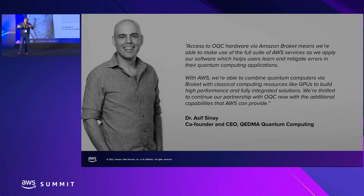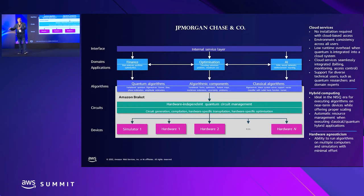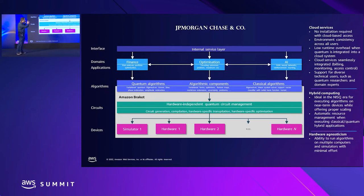I believe Amazon Braket helps foster these connections with the purpose of accelerating innovation. At re:Invent 2021, Marco Pistoia — Managing Director and Head of Global Technology Applied Research at JPMorgan Chase — presented a platform his team built to work with quantum computers. The interesting domains are finance optimization and artificial intelligence. The platform uses multiple AWS services, including Amazon Braket, to access different quantum computers.